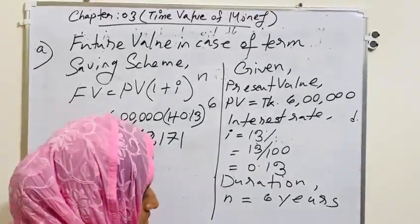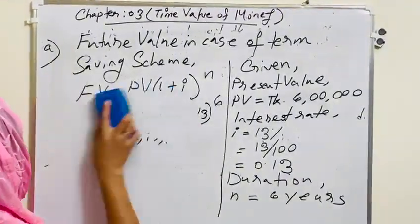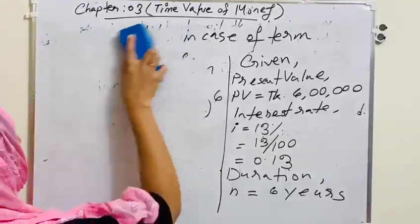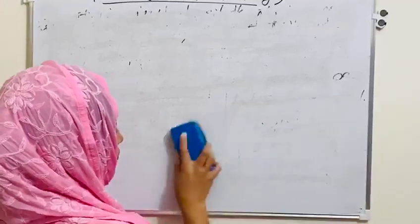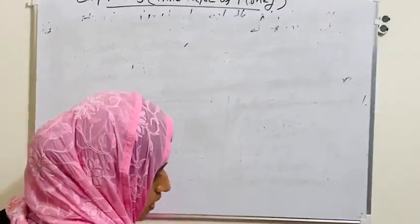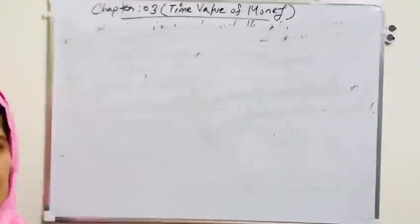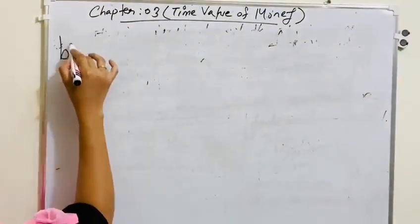And our today's second requirement is we have to analyze or evaluate Mr. Ali's decision. For this, we have to calculate bank's double benefit.